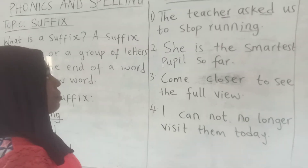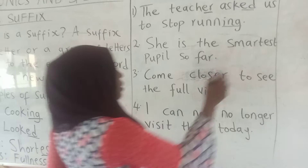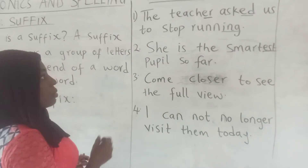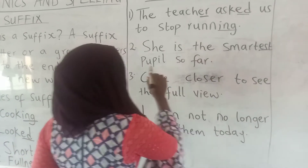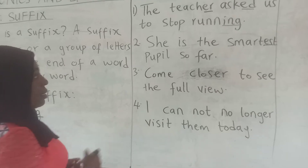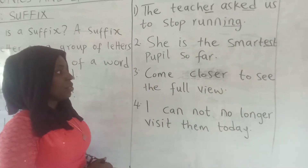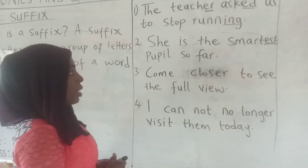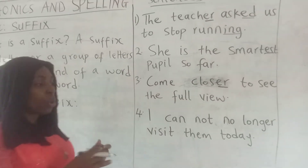Number two: 'She is the fastest pupil so far.' I can see 'est' at the end of 'fast' to get 'fastest'. She is the smartest pupil so far — 'est' is added to 'smart'. Number three: 'Come closer to see the full view.' I can see 'er' at the end of 'close' to get 'closer'.